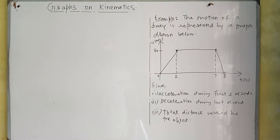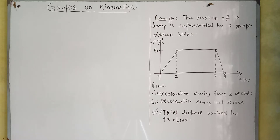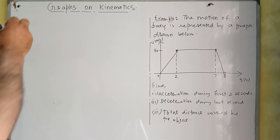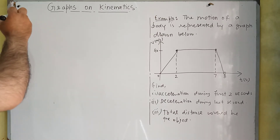Hello dear students. In our last video we studied the graphical solution of simultaneous linear equations and linear inequalities. In this video we will study graphs on kinematics. Basically we will have two types of graphs: first is the distance-time graph, and second is the velocity-time graph.